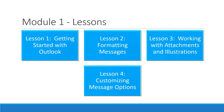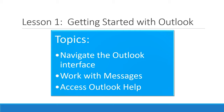We're going to reach those learning outcomes by going over four lessons. The first lesson is getting started with Outlook. Lesson two is all about formatting messages. In lesson three, we'll start working with attachments and illustrations. And lesson four, we'll customize message options. Our topics in lesson one are navigating the Outlook interface so you become comfortable working in that environment, working with messages, and how to get help.